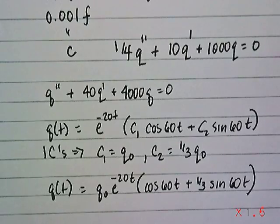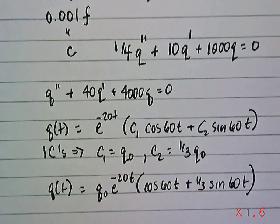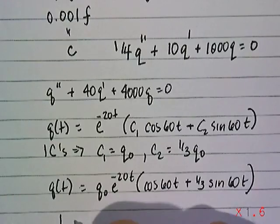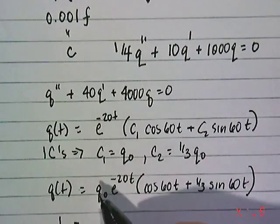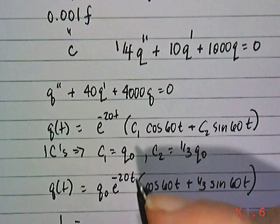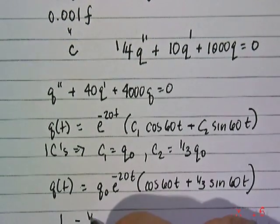So you can see what's going to happen in time is definitely going to go to 0. Again, we could check our values to make sure it's underdamped according to the relationships that we mentioned before between R squared and 4L divided by C. Again, L was one quarter.